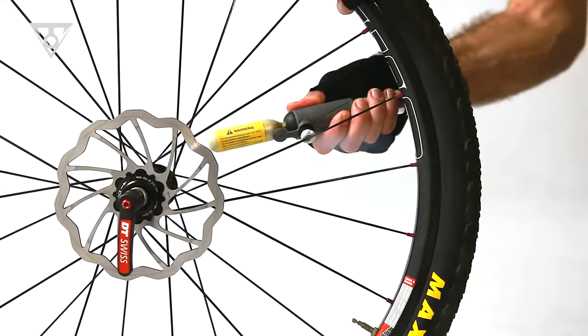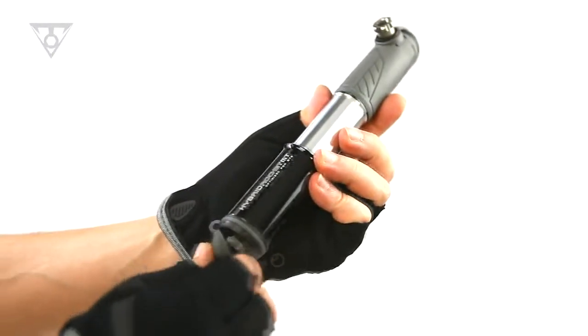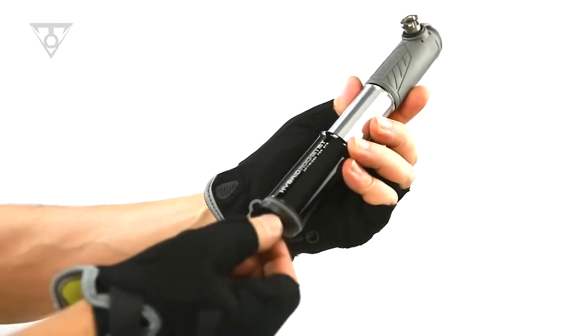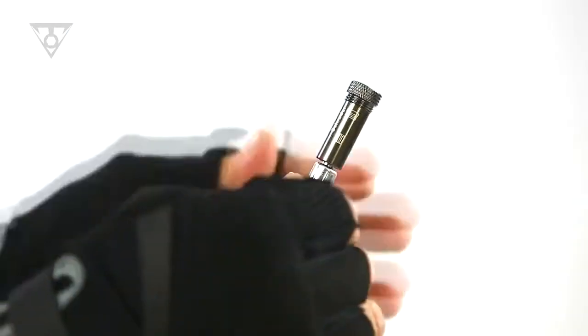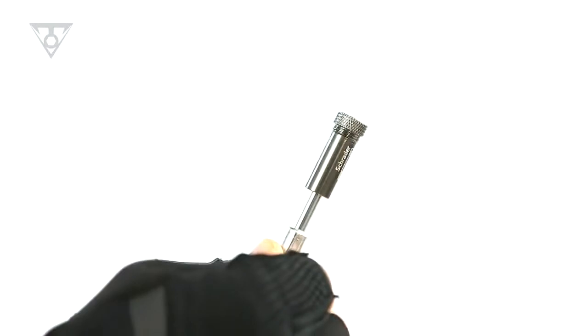Once the CO2 cartridge is spent, switch to using the mini pump function. The smart head thread lock threads directly onto Presta or Schrader valves without needing to change out internal parts.